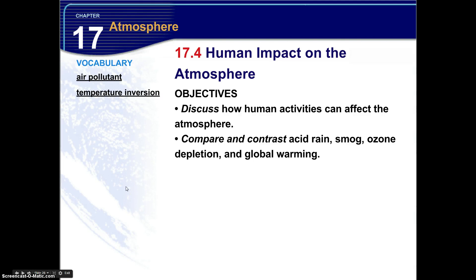We begin the fourth and final section of Chapter 17, The Atmosphere. This is 17.4, Human Impact on the Atmosphere. The vocabulary terms for this section are air pollutant and temperature inversion. Make sure you have those in your lab notebook. If you have not skimmed through the section yet, please do so before you begin.